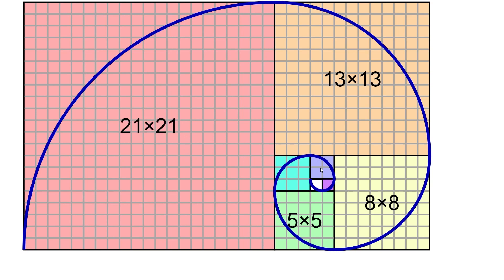Now I will explain how we obtained this sequence of sizes. We need to start at the center of the spiral. You need two squares — one of size one and another one of size one. Then to have the size of the next square, which is of size two, you need to sum the sizes of the two previous squares. So size one plus size one gives you the size of this square, which is two. Then you follow the same principle: you take the sizes of the two previous squares, so one plus two gives you the size of this square, which is three, and so on.